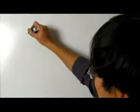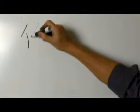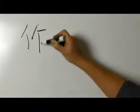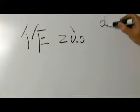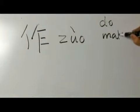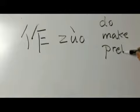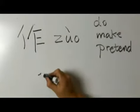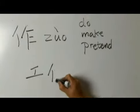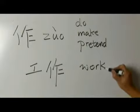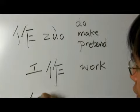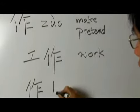The next character is zuo. It means to do, make, and sometimes pretend. As in gong zuo, meaning work or jobs, and zuo yie, meaning operation or homework.